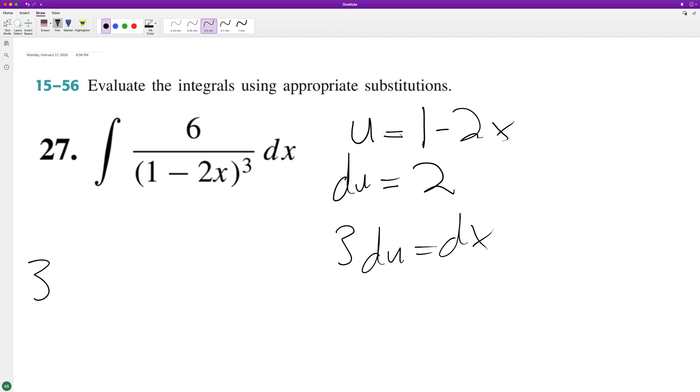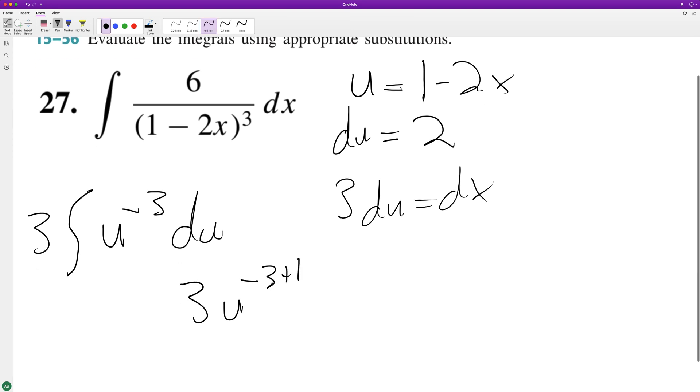We have 3 u raised to the negative 3 du. If we integrate this, we're going to get 3 u raised to the negative 3 plus 1, and then divide through by negative 3 plus 1, plus c.